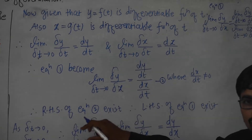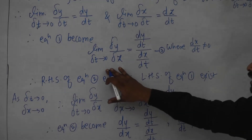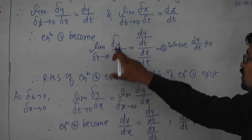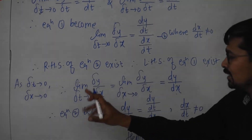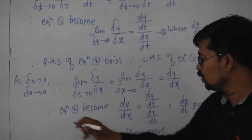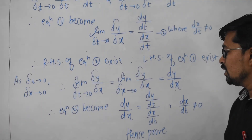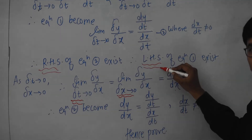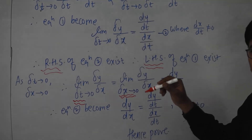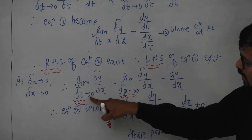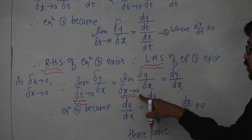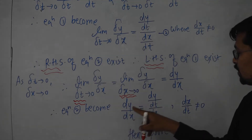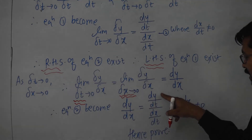If the right-hand side of an equation exists and is finite, then the left-hand side also exists and is finite. Since delta t → 0 implies delta x → 0, we can change the limit variable. So limit as delta x → 0 of (delta y / delta x) = dy/dx. Therefore equation 2 becomes: dy/dx = (dy/dt) / (dx/dt). This is the proof of the given theorem.